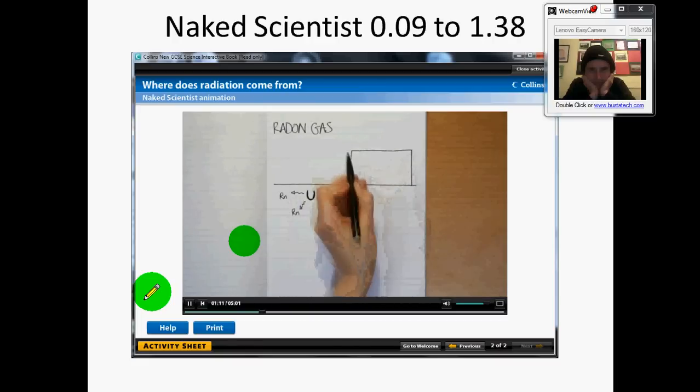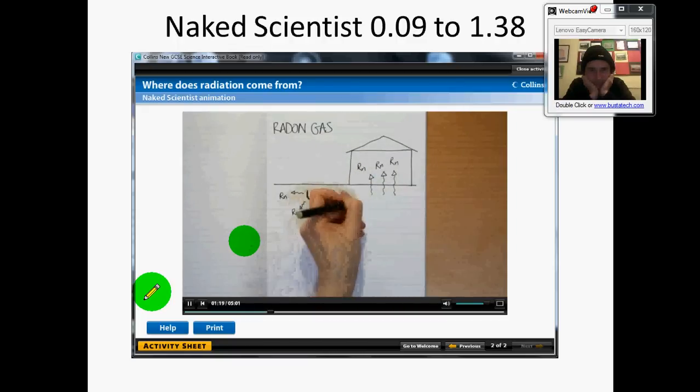Radon can build up underground eventually making its way to the surface and into people's homes exposing them to much higher doses of radiation. This is particularly important in places where there's a lot of granite rock which contains relatively high levels of uranium like parts of Devon and Cornwall.